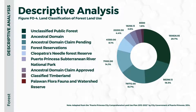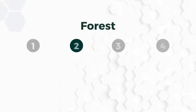This figure shows that 30% are unclassified public forests, followed by ancestral domain and ancestral domain claim pending, which is 15.7%.